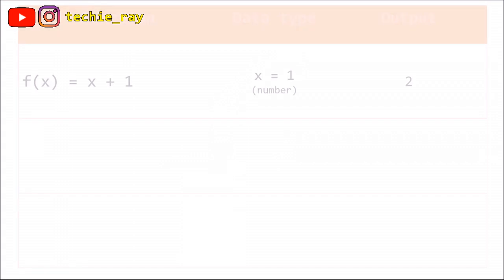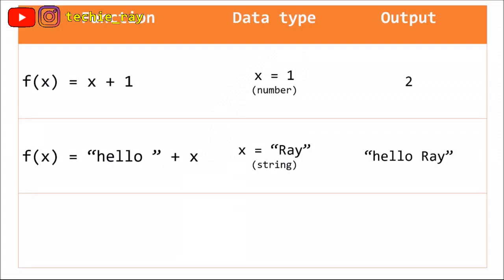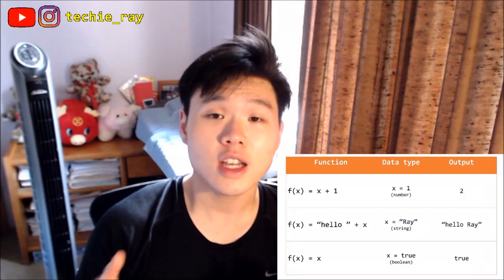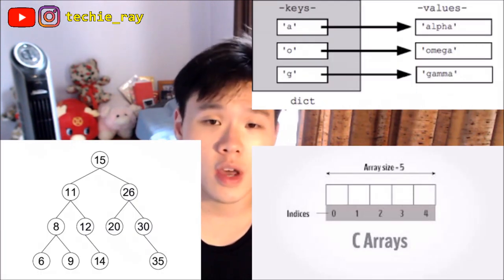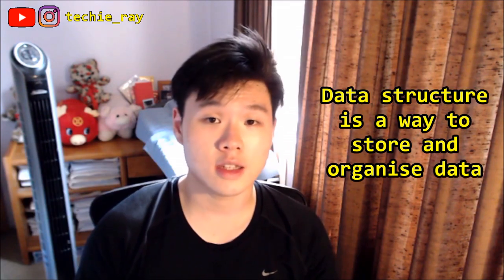You can build functions that can accept all sorts of data, such as numbers, strings, true or false values. These are called data types and can also have data structures like arrays, dictionaries, trees. Basically, these are just fancy ways of storing and organizing data types.